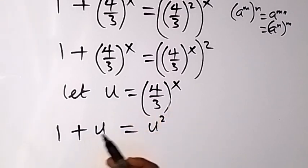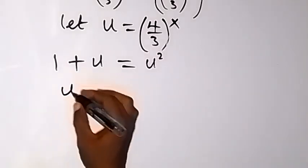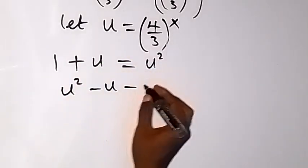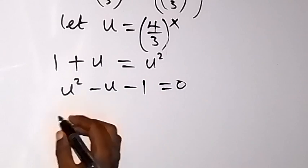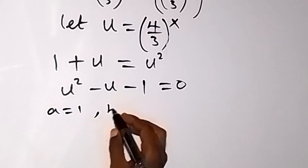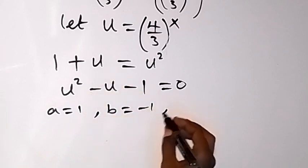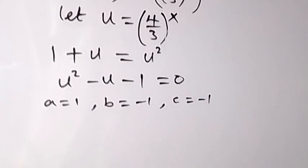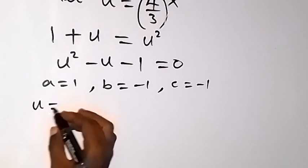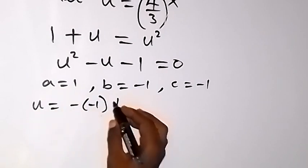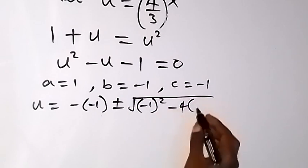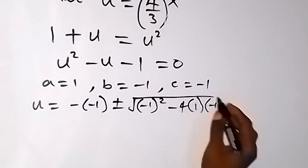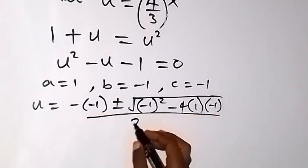We use this to form a quadratic equation. We have u squared minus u minus 1 equals 0. We can solve this quadratic equation using the quadratic formula, where a equals 1, b equals minus 1, and c equals minus 1. From the quadratic formula, u equals minus b — that's minus minus 1 — plus or minus square root of b squared minus 4ac, over 2a, which is 2 times 1.